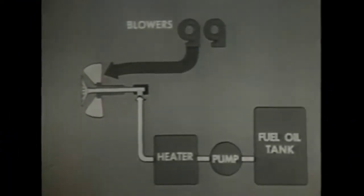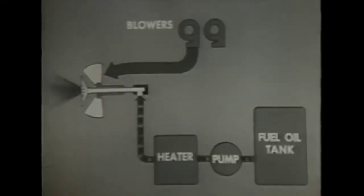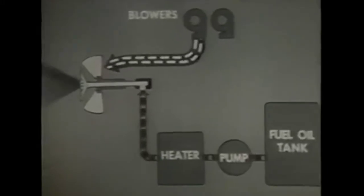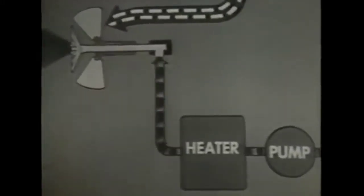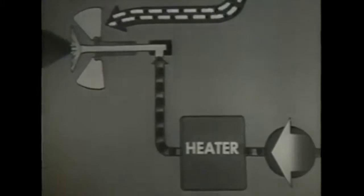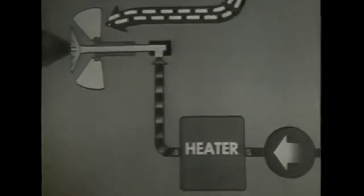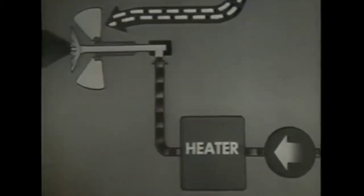You control the firing rate of the burner by varying the amount of fuel oil flowing through the burner. Of course, you must make corresponding changes in the amount of air reaching the burner when you change the amount of fuel oil. When you increase the pump pressure on the fuel oil line, you increase the quantity of oil going through the burner. When you decrease the pressure, you decrease the quantity of oil.